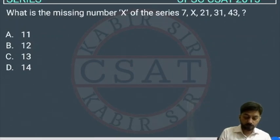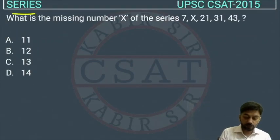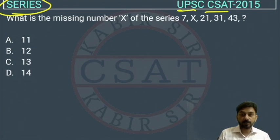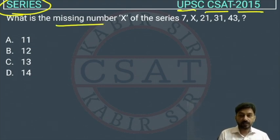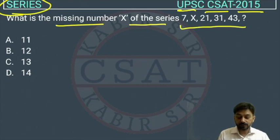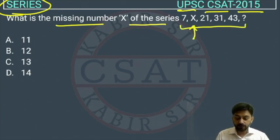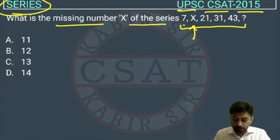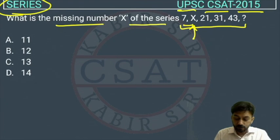This is a series question asked by UPSC in their CSAT paper of 2015. We need to find the missing number x in the series. Initially, we look at the trend: 21 and 31 — what is the difference?